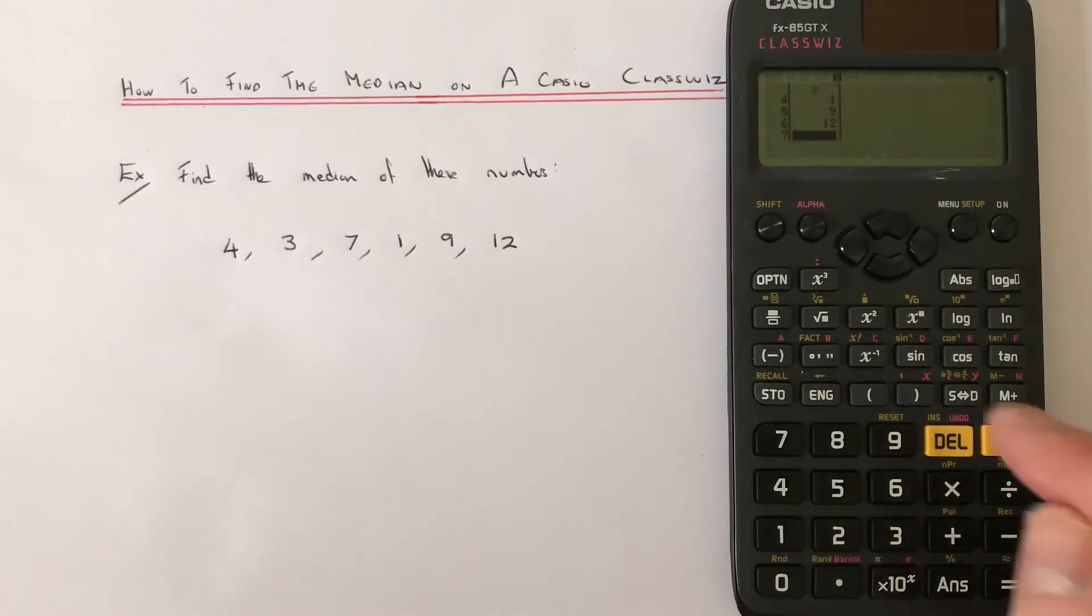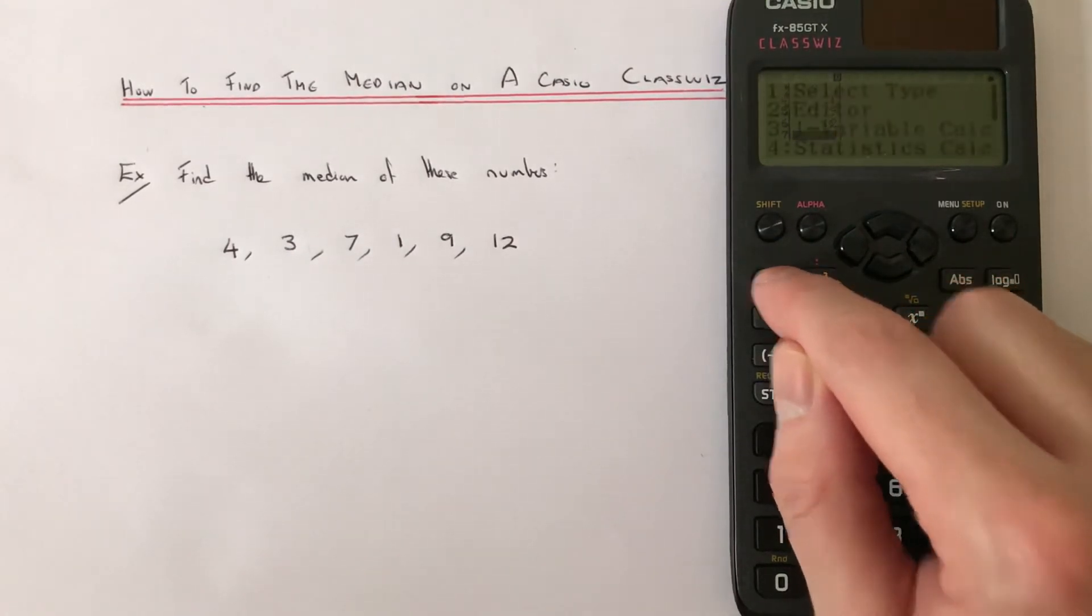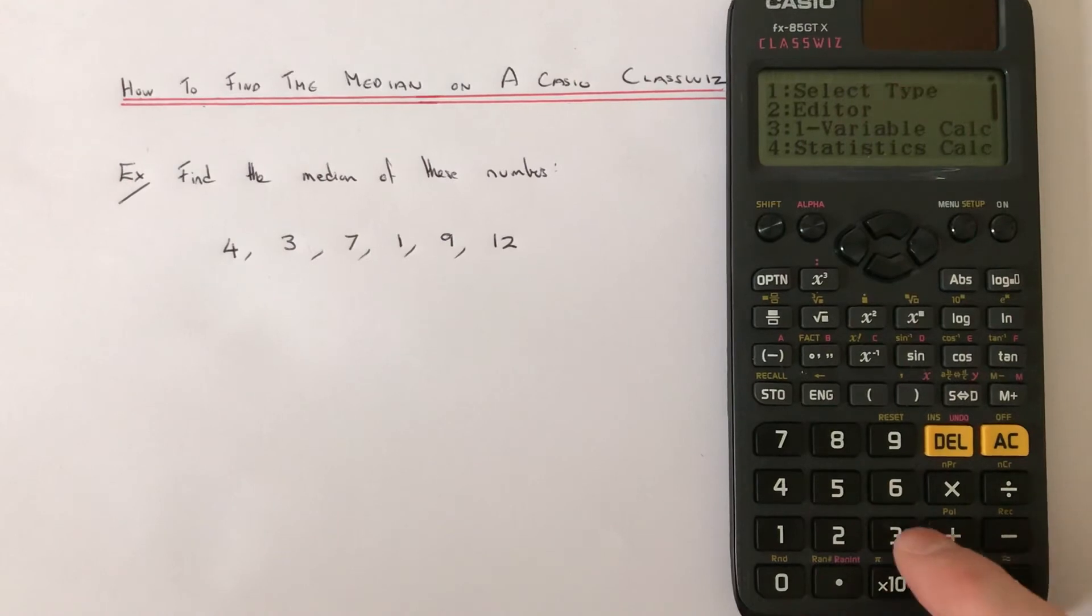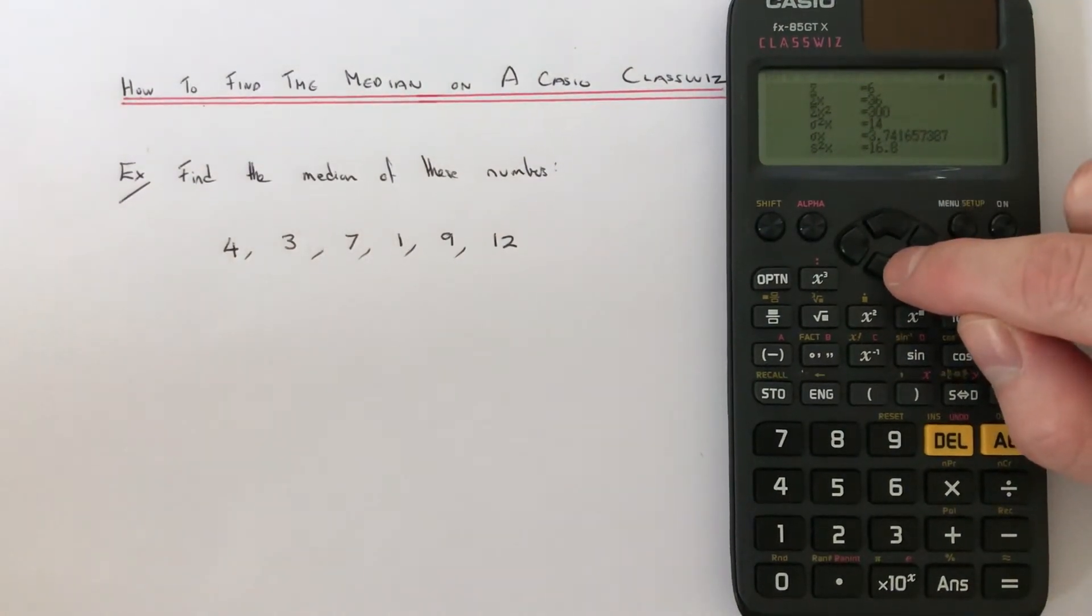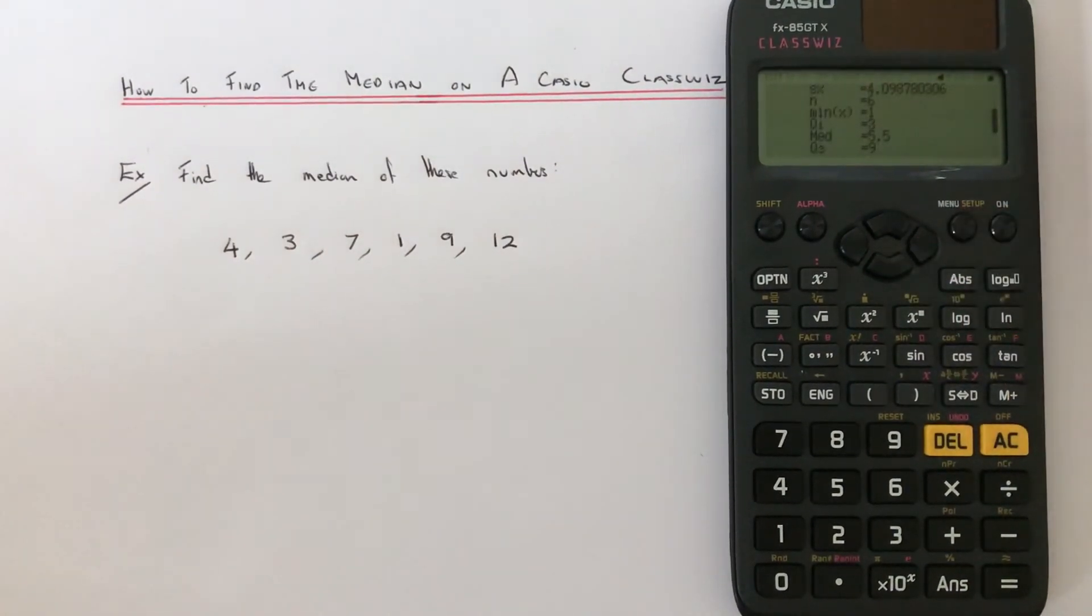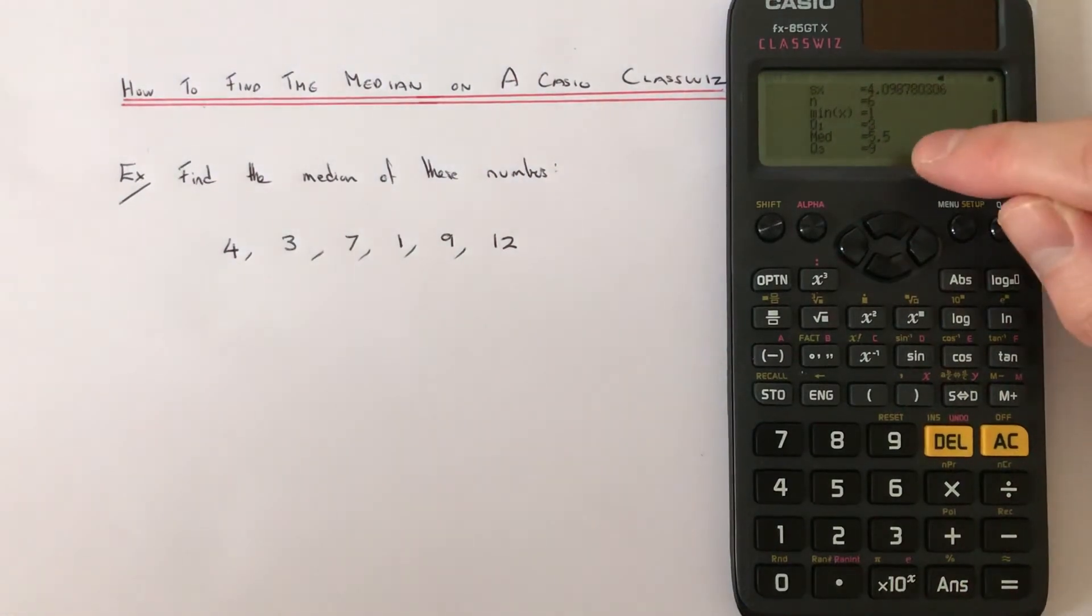We've got no more numbers, so we just then press the option key, and if we press number 3, we get all the statistical values. We need to scroll down to the second page and you can see the